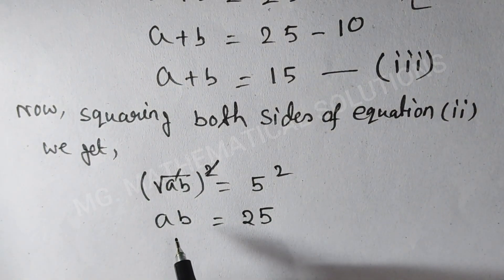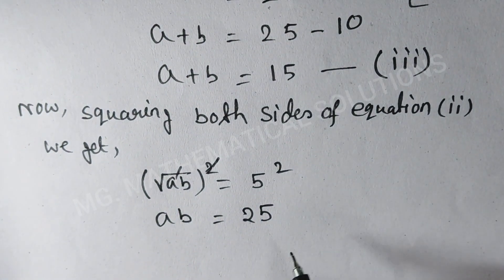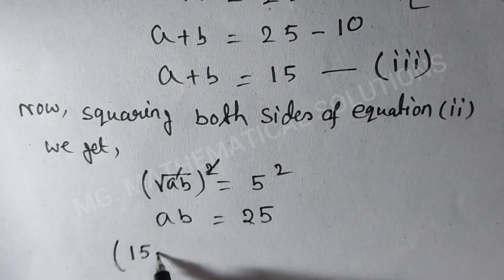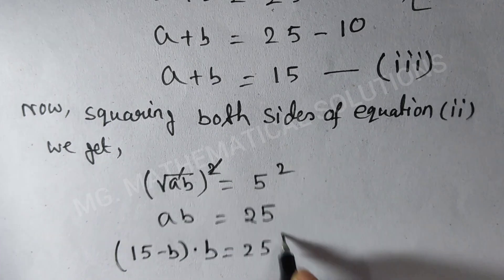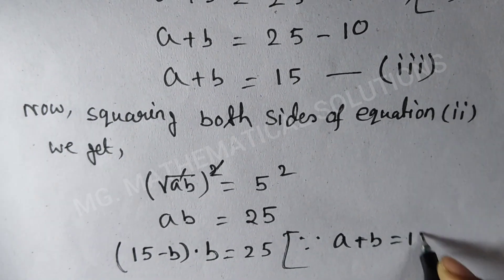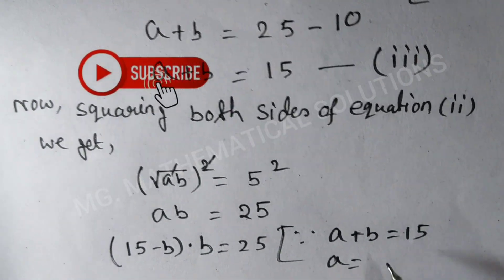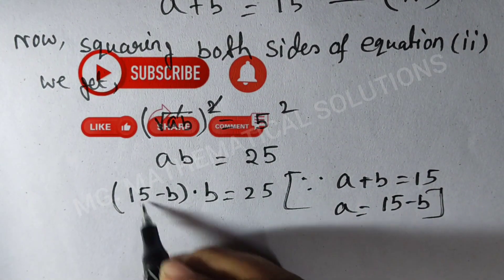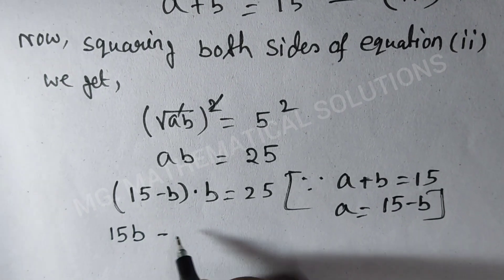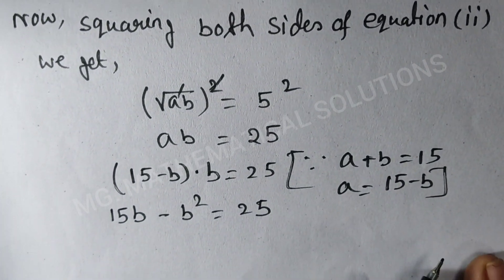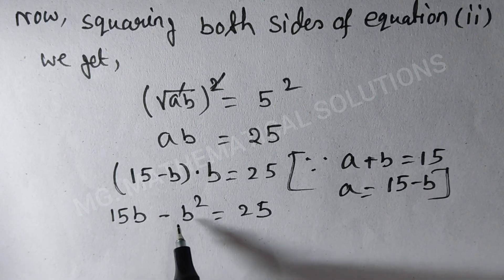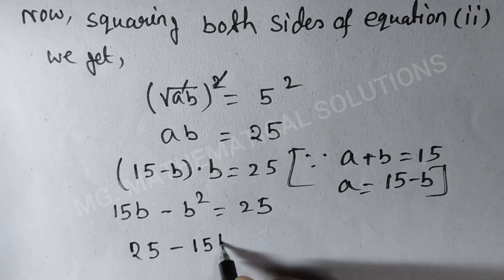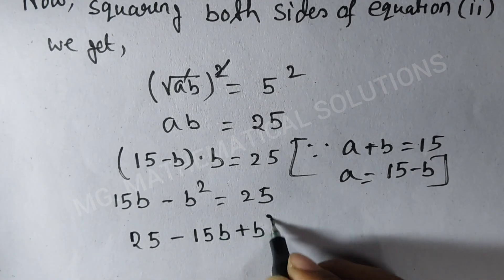Now we substitute the value of a from equation 3: since a plus b equal to 15, a equal to 15 minus b. So (15 minus b) times b equal to 25. Multiplying out gives 15b minus b squared equal to 25. Rearranging, we write 25 minus 15b plus b squared equal to 0.